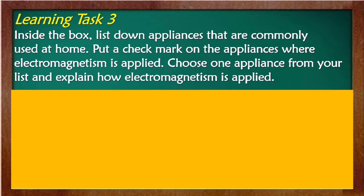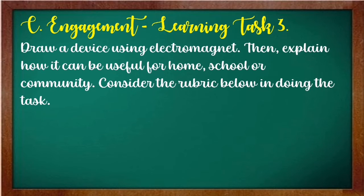Learning Task Number 3: Inside the box, list down appliances that are commonly used at home. Put a check mark on the appliances where electromagnetism is applied. Choose one appliance from your list and explain how electromagnetism is applied. For the next learning task, draw a device using an electromagnet, then explain how it can be useful for home, school, or community. Consider the rubric in your learner's packet.